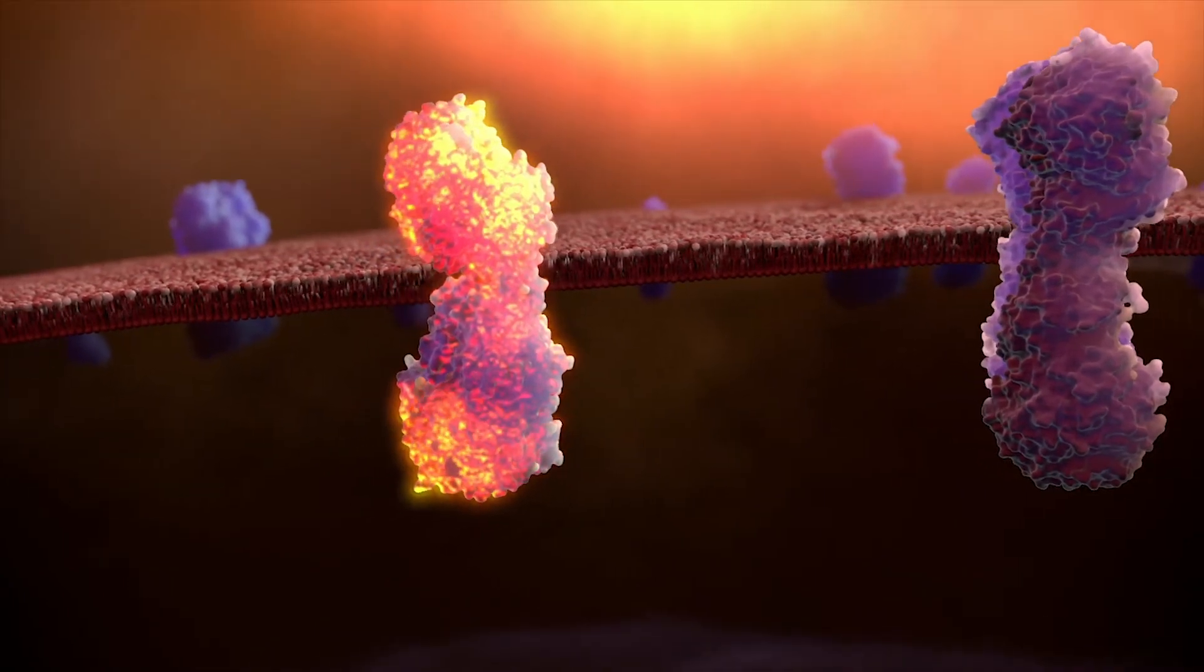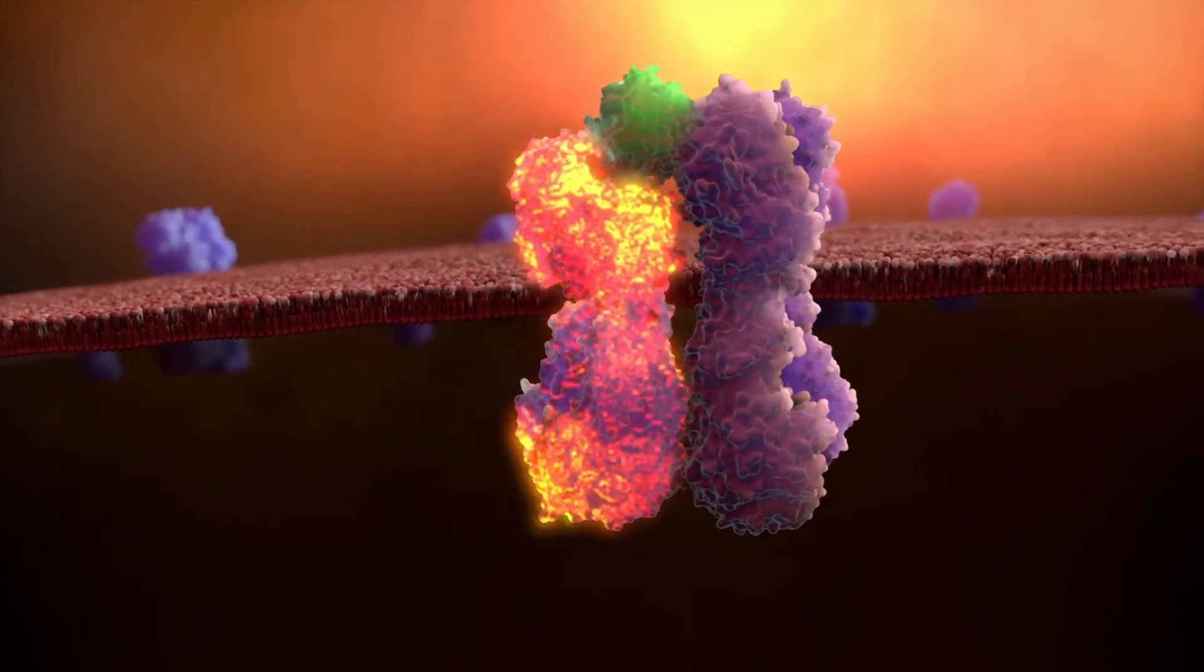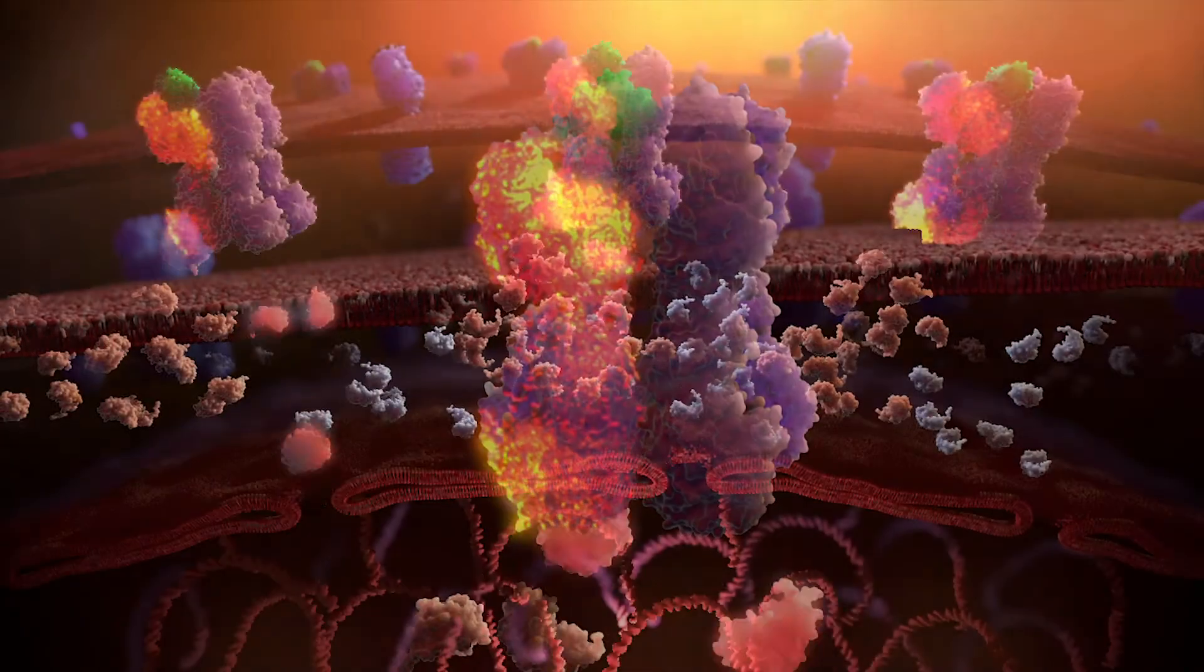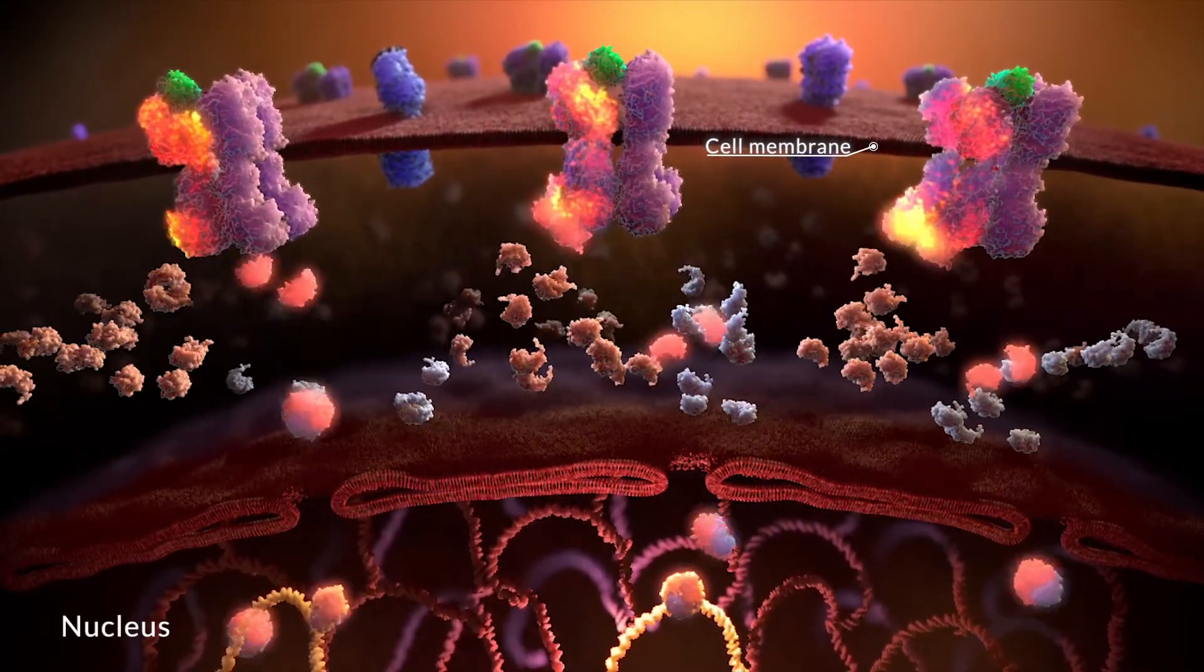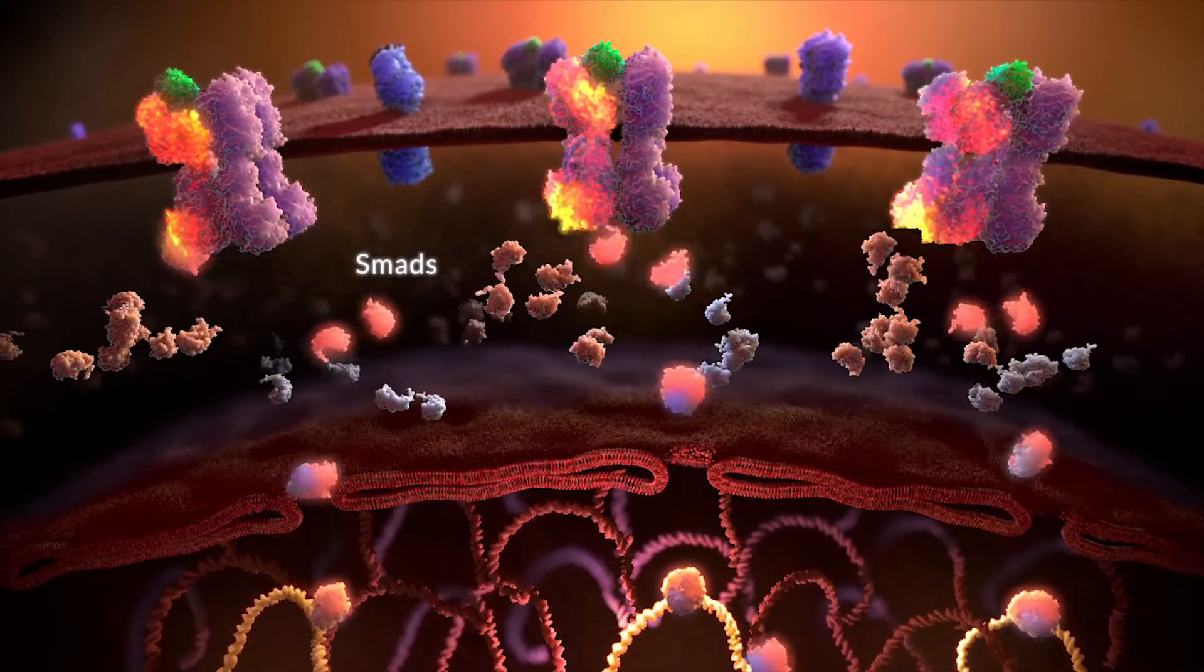Scientists believe the mutation allows the ALK2 receptor to become more active, especially when bound by extracellular proteins called ligands. This abnormal activation results in increased BMP signaling, which is delivered to the nucleus by SMAD protein complexes.